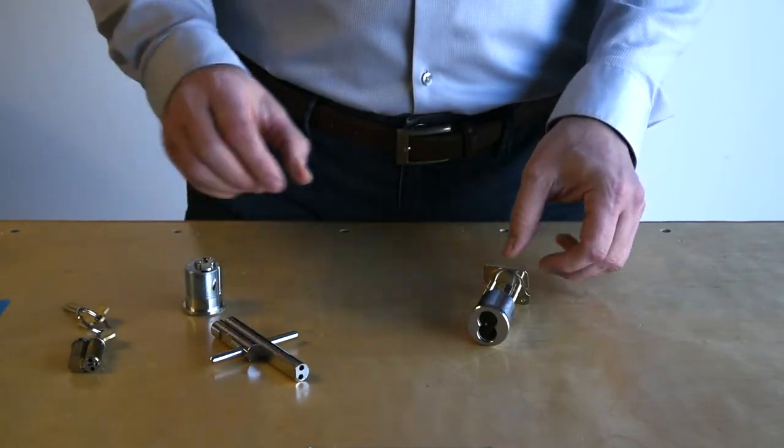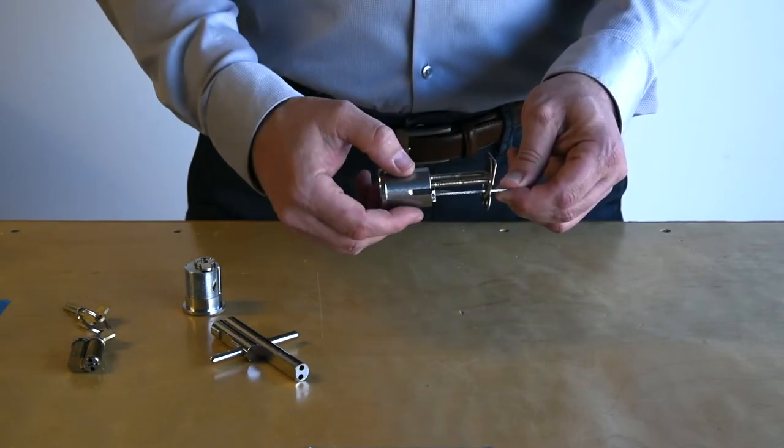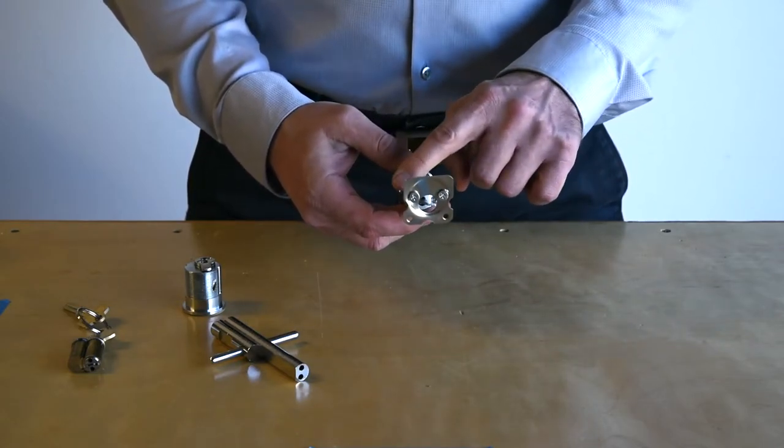The rim cylinder is a different type of device. You'll notice there are no threads on the outside of the housing and it is secured to the door with two screws.